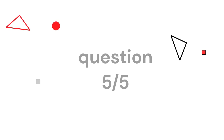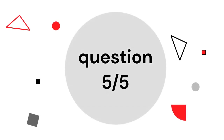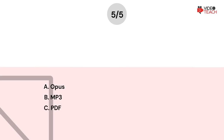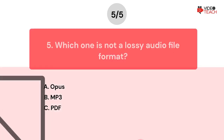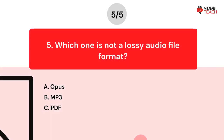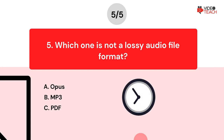Question number five. Which one is not a lossy audio file format? Option A, Opus. Option B, mp3. Option C, PDF. Now you have about 15 seconds to think about your answer.